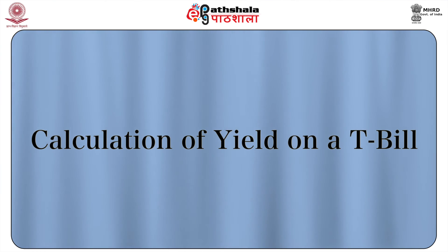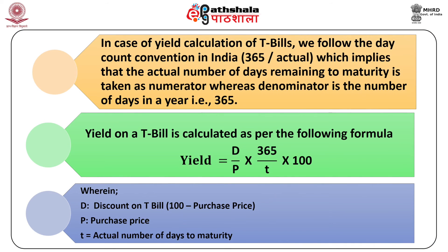Calculation of Yield on a T-bill: In case of yield calculation of T-bills, we follow the day count convention in India of 365/actual, which implies that the actual number of days remaining to maturity is taken as the numerator, whereas the denominator is the number of days in a year, that is 365. The yield on a T-bill is calculated as per the following formula: Yield = (D / P) × (365 / T) × 100, wherein D is the discount on the T-bill (100 minus purchase price), P is the purchase price, and T is the actual number of days to maturity.